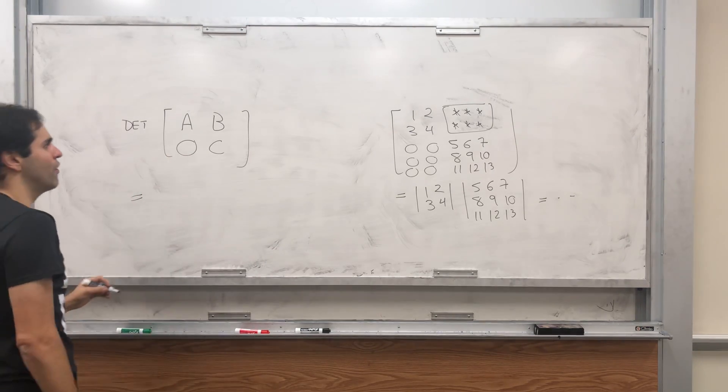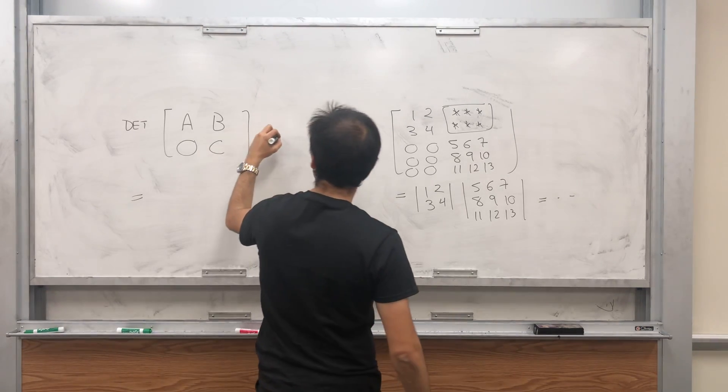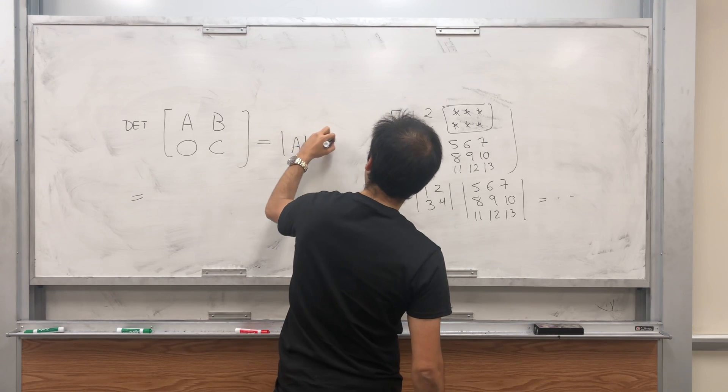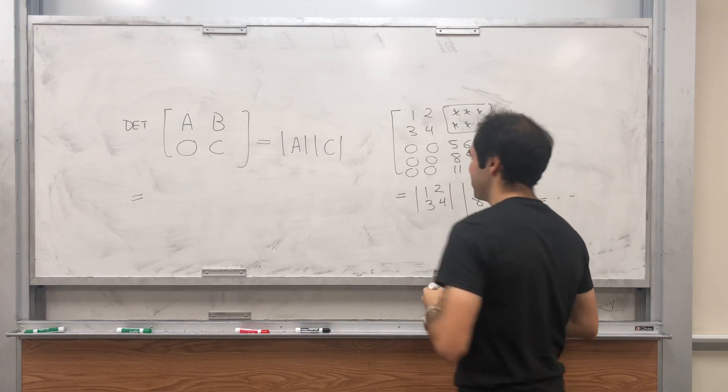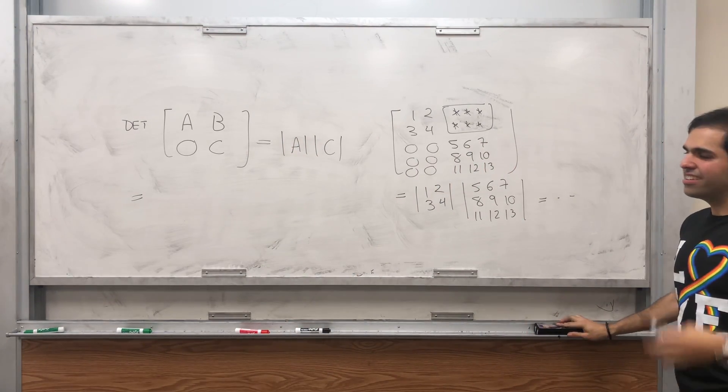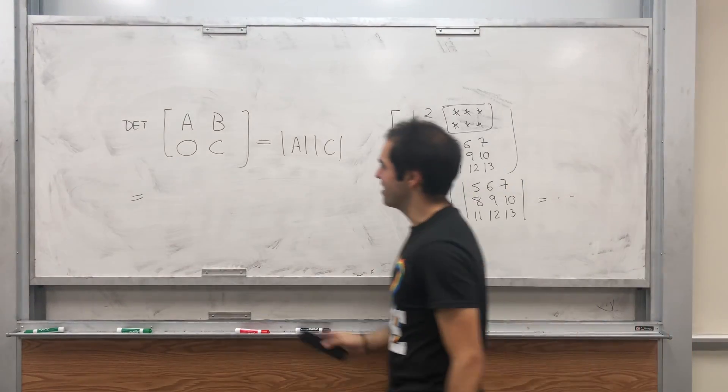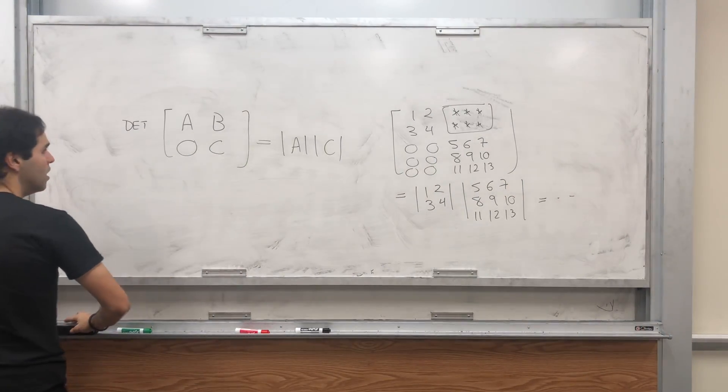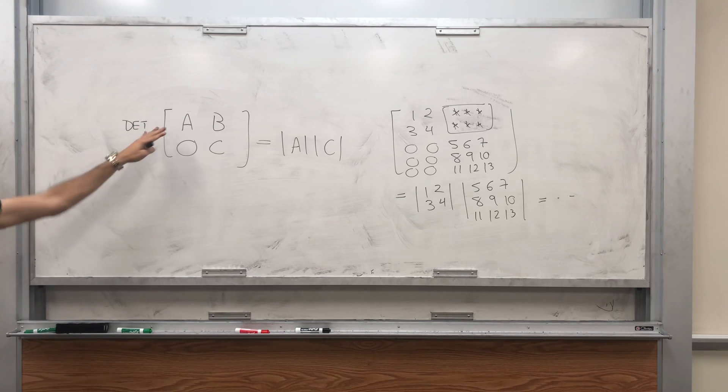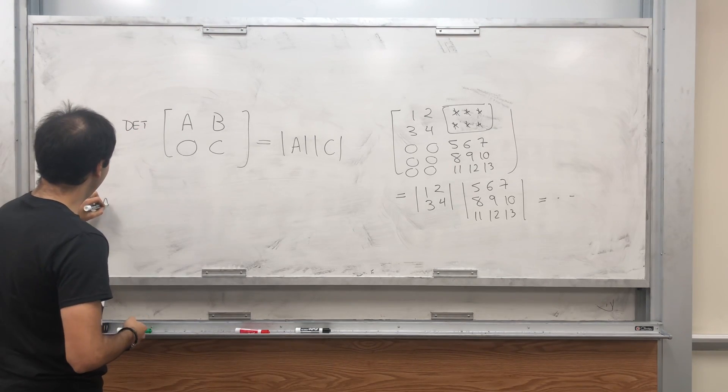So I'm claiming that the determinant of [[A, B], [0, C]] is simply the determinant of A times the determinant of C. And there's a very neat way of showing this. First of all, let's do the special case where A is the identity matrix. So claim one: